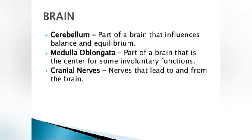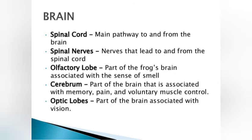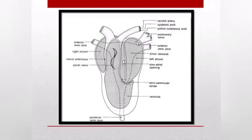The cerebrum influences balance and equilibrium. The medulla oblongata controls involuntary functions and helps cranial nerves that lead to and from the brain. The spinal cord is the main pathway for spinal nerves. These are all the parts of the brain that help the frog maintain its balance, including the olfactory lobes.